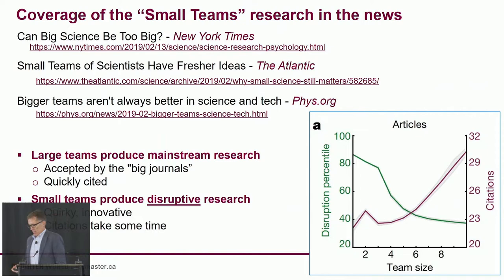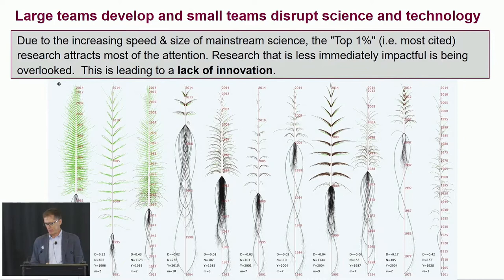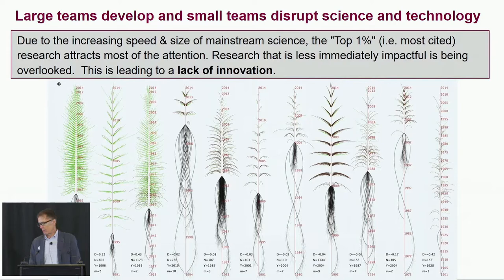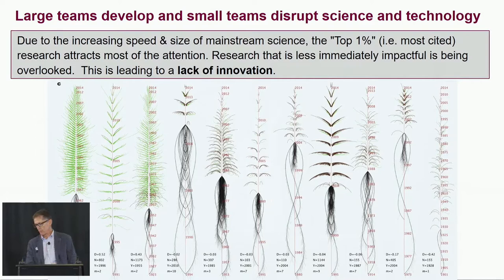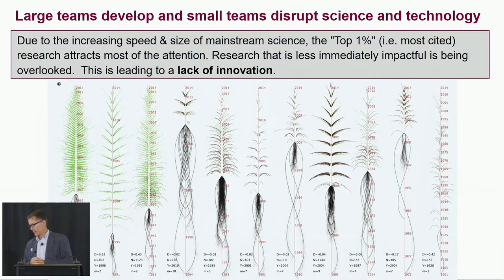They've also come up with very pretty visualizations of the disruptiveness of particular articles — vertically organized by year, these fern diagrams. Over on the left-hand side is a highly disruptive paper with a D score of 0.91, embellished with pretty colors. Over on the right-hand side is a very sickly-looking, non-disruptive paper with a negative disruption score of −0.42.